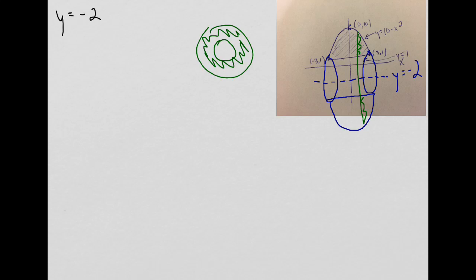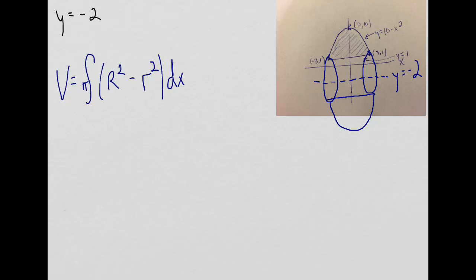So I know my formula for washers is V equals integral, or pi times the integral of open parentheses, big R squared minus little r squared, dx. Okay, so now it's a matter of figuring out what the big R and the little r are.